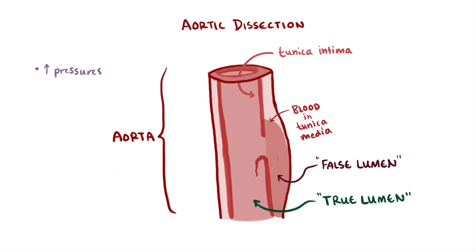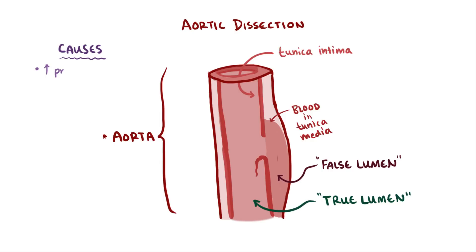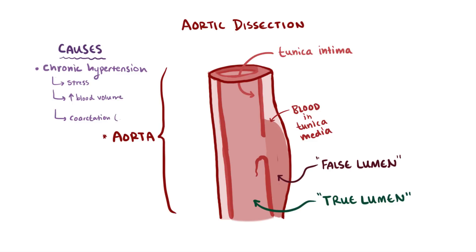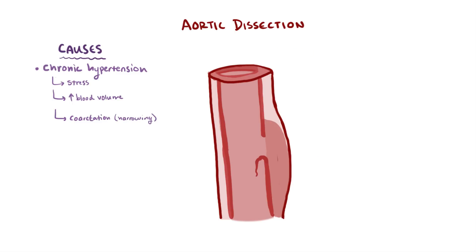Since high pressure is a cause of aortic dissection, it's no surprise that the aorta is the prime target for this problem. Chronic hypertension is the major cause, whether the hypertension is caused by stress or from increased blood plasma volume, like in pregnancy. Blood vessel coarctation, which is the narrowing of a blood vessel, can also cause aortic dissection.